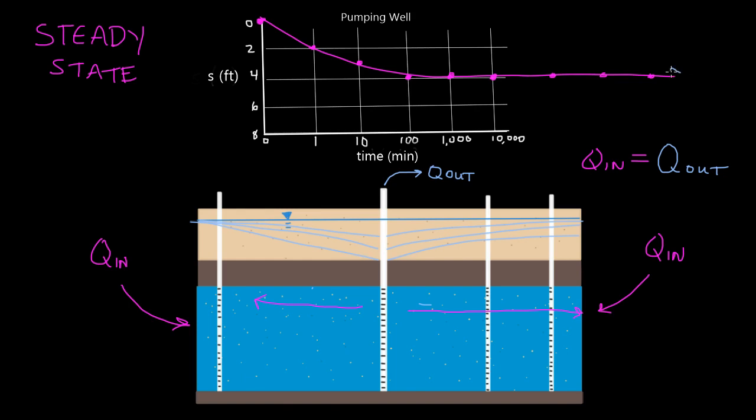So this is really kind of a theoretical concept. This isn't really what happens in nature. Typically, we'll see increased drawdown, or we'll see drawdown continue over the course of our test, or we'll see drawdown start to decrease. And we'll get into that in a minute here. But that is what we call transient state.